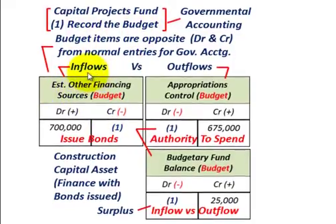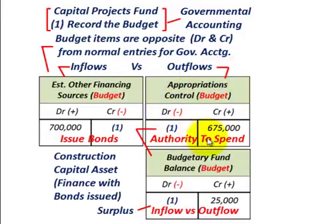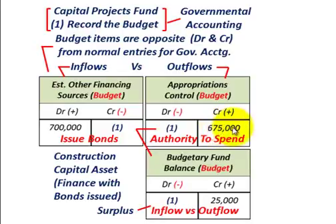To record the budget, we set up our inflows — estimated other financing sources — which is how we're going to finance this construction project with bonds issued. We debit that for $700,000, the amount of bonds to be issued. Then for our outflows, we set up our appropriations control account — the amount the city has authority to spend — and we credit that for $675,000. So we're issuing bonds for $700,000 but only have authority to spend $675,000.